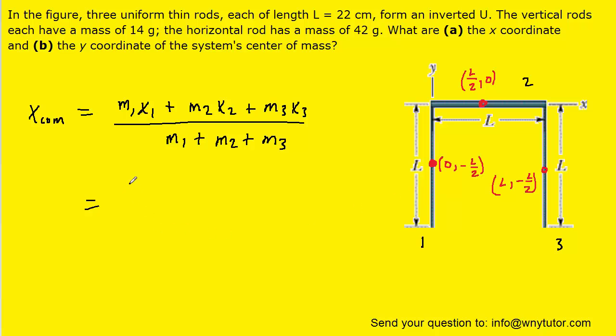So for example, for the first rod that we've labeled 1, we know that its mass was 14 grams, and then the x coordinate of its center of mass was 0, so we can plug that in. For mass 2, we were told that its mass was 42 grams, and then the x coordinate for its center of mass was l divided by 2. Now we know l is 22 centimeters, so rather than writing l divided by 2, we can write 22 centimeters divided by 2.